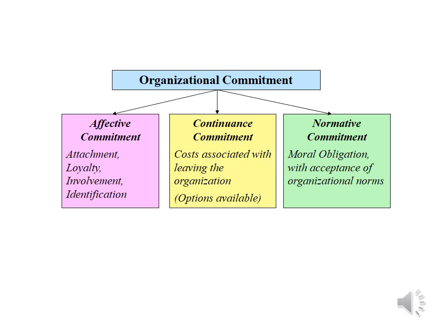Organizational commitment has three main categories: affective commitment, continuous commitment, and normative commitment. Affective commitment focuses on attachment, loyalty, involvement, and identification with the organization. Continuous commitment focuses on the costs associated with leaving the organization. And normative commitment focuses on the moral obligation and acceptance of organizational norms.